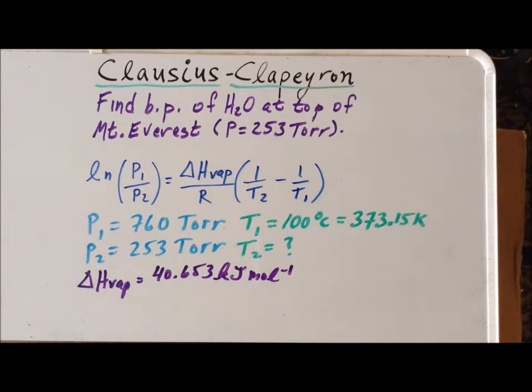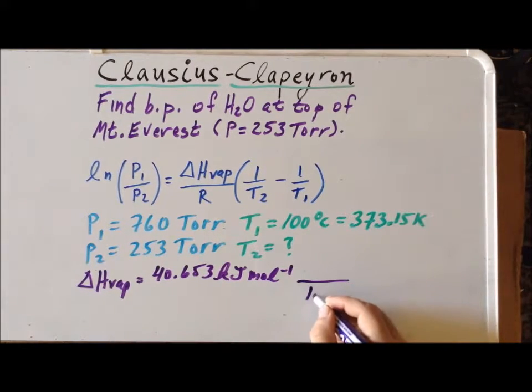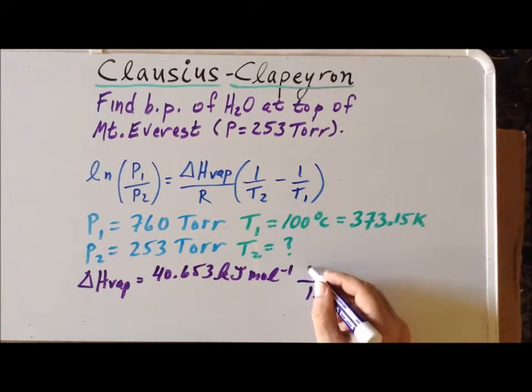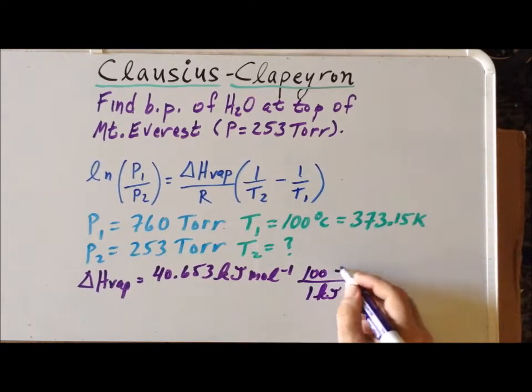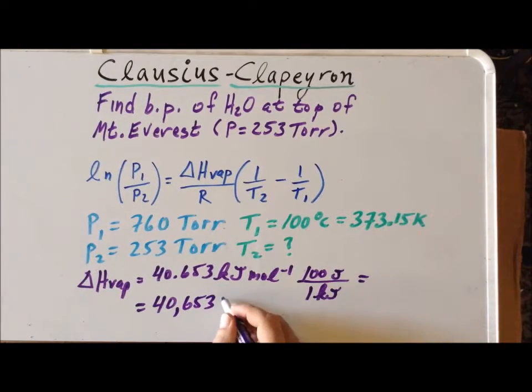For our purposes, it's convenient to convert this quantity to joules. Recall that 1 kilojoule equals 1,000 joules. So when we make that conversion, we can cancel units of kilojoules and we see that this is equal to 40,653 joules per mole.